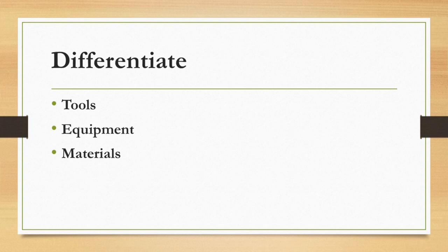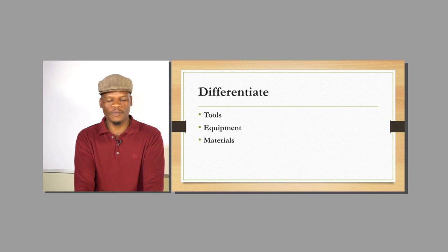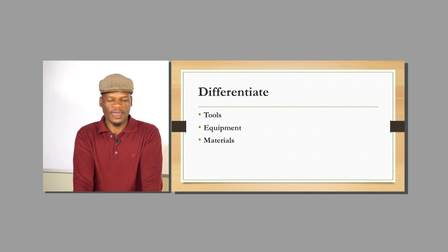Let's quickly differentiate between these three terms. Tools are divided into two groups: hand tools and power tools. Hand tools are each and every item that you can carry in your hand and use — most of those tools you can use with only one hand. But once that tool needs two hands to operate, it is now going to be clustered under equipment.